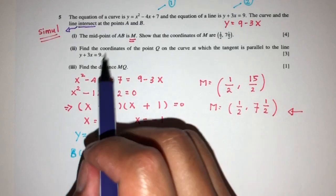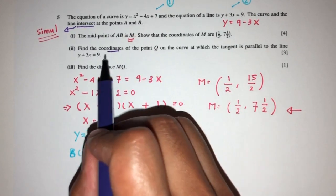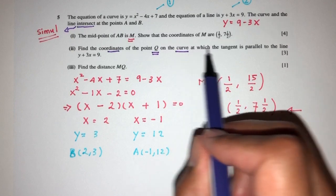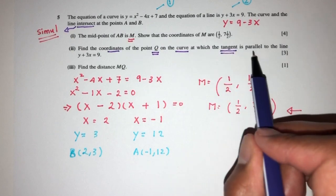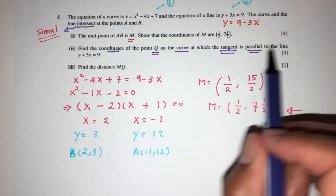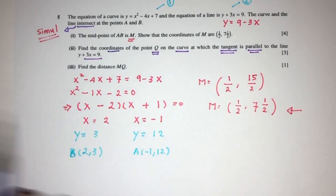Now for part 2, we have to find the coordinates of the point Q on the curve at which the tangent is in the same direction to the line y + 3x = 9. For example, we just have to understand something here.